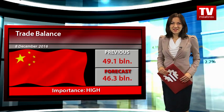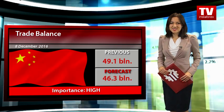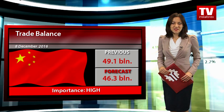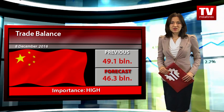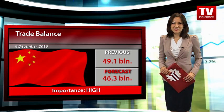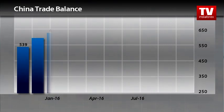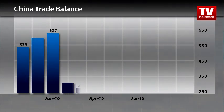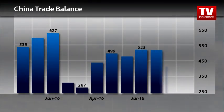On Thursday, China will publish its trade balance data for November. Markets expect the surplus to decline to 46.30 billion dollars. In October, the trade surplus in China made up 49.1 billion dollars, rising from 42 billion dollars in September.